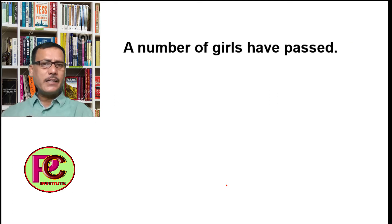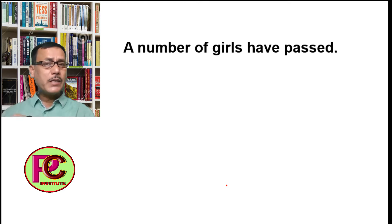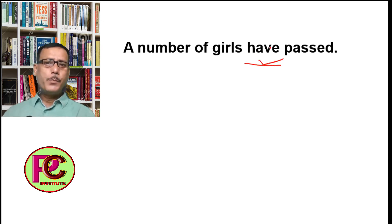Let's look at some examples. 'A number of girls have passed.' 'A number of' means 'many' or 'a lot of', so 'a number of girls' means many girls — the subject is plural, and since the subject is plural, the verb is also plural. 'Have' used here is a plural verb, according to the plural subject.